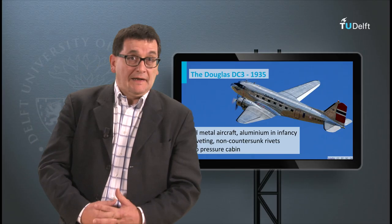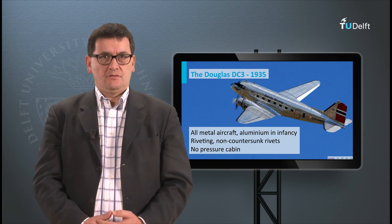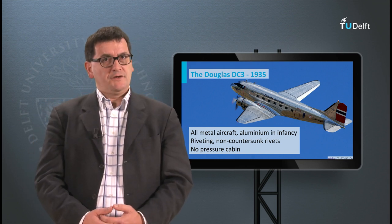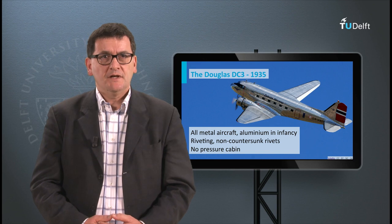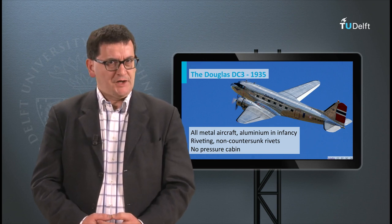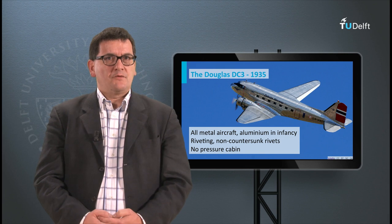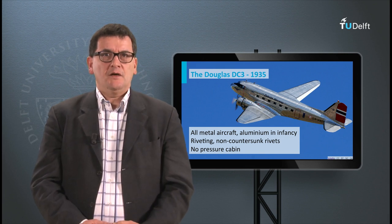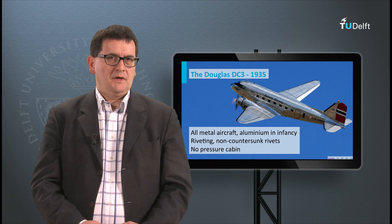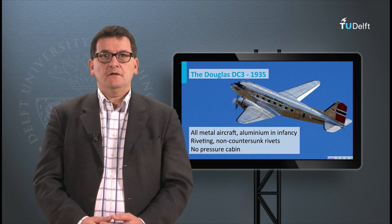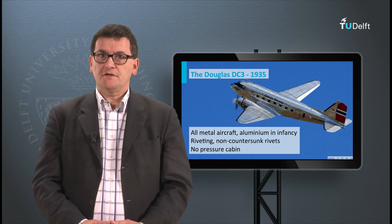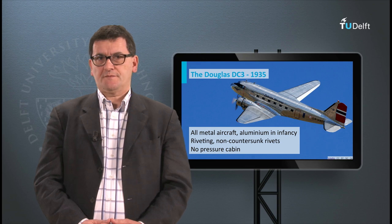Aluminium as a structural material was rather new in those days. The structures were joined using rivets, just as in steel bridges and ships. The rivets had round protruding heads and were not very efficient from an aerodynamic point of view. Later, countersunk rivets were introduced, resulting in smooth outer surfaces.